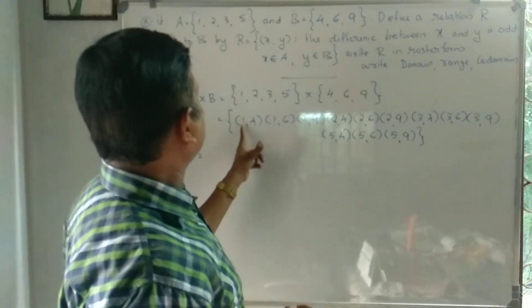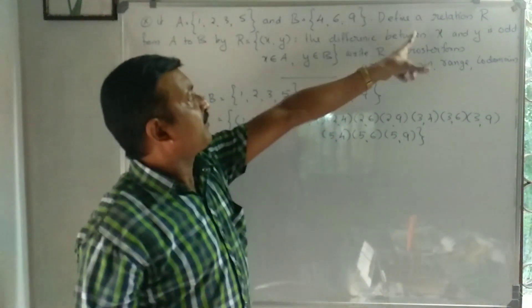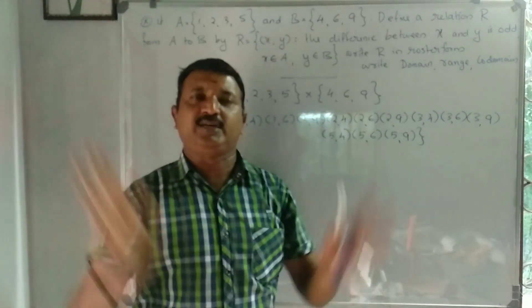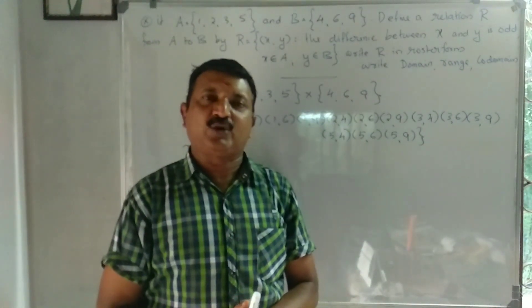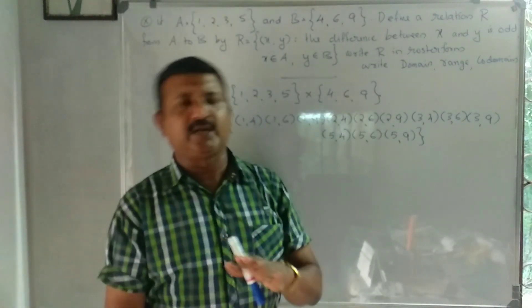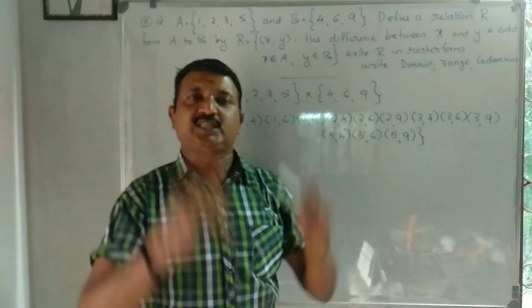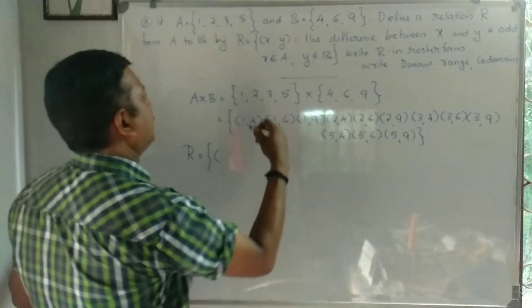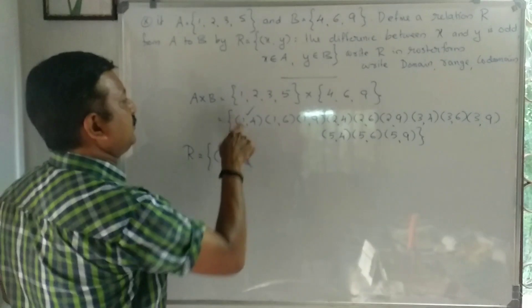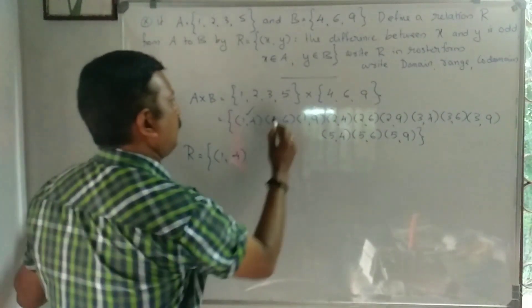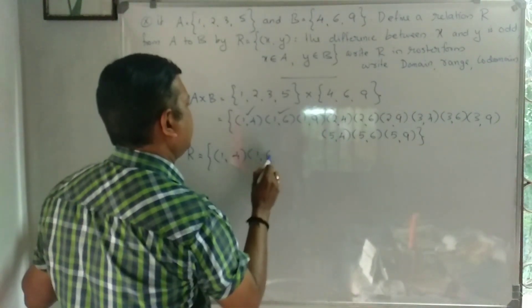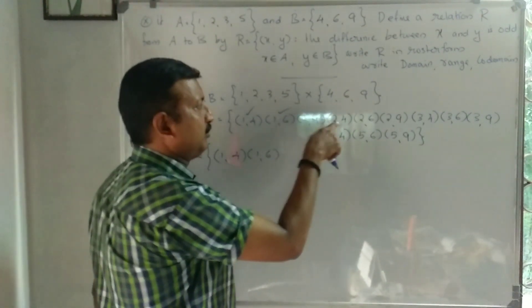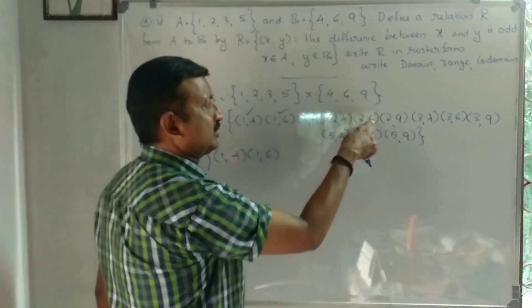Now check the condition: the difference between x and y must be odd. For (1,4): 4 - 1 = 3, which is odd. For (1,6): 6 - 1 = 5, odd. For (1,9): 9 - 1 = 8, even. For (2,4): 4 - 2 = 2, even.